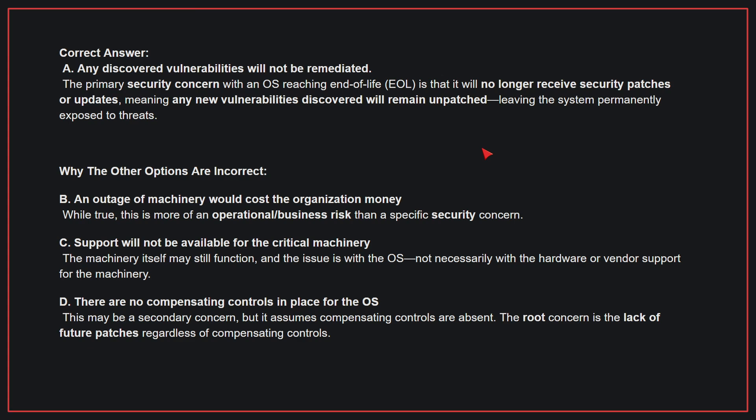Why the other options are incorrect: B. An outage of machinery would cost the organization money — while true, this is more of an operational business risk than a specific security concern. C. Support will not be available for the critical machinery — the machinery itself may still function, and the issue is with the OS, not necessarily the hardware or vendor support. D. There are no compensating controls in place — this may be a secondary concern, but the root concern is the lack of future patches regardless of compensating controls. Therefore, the correct answer is A.